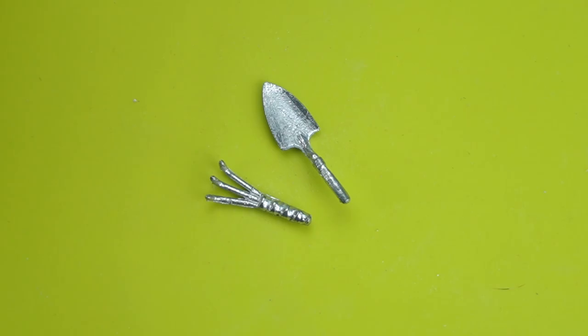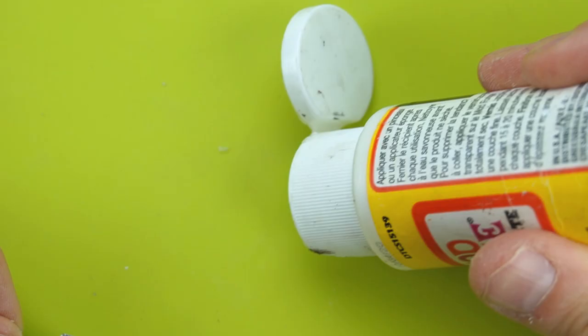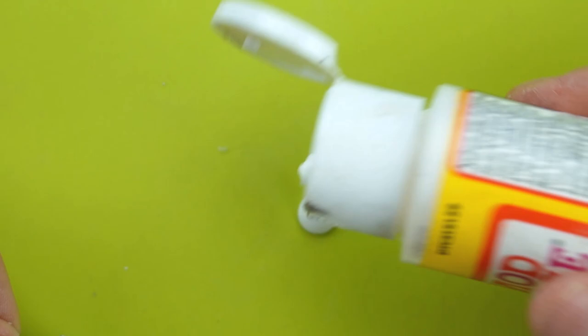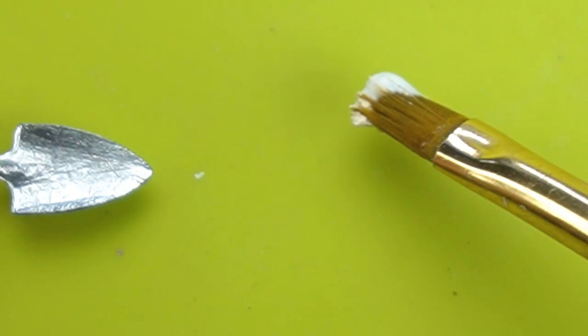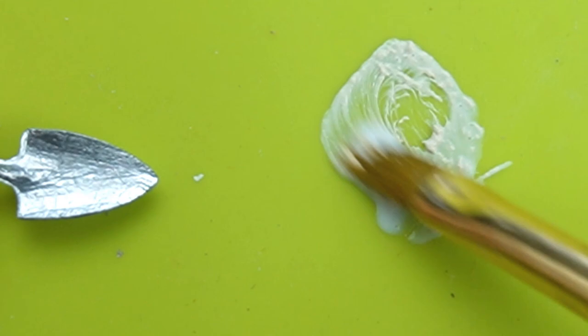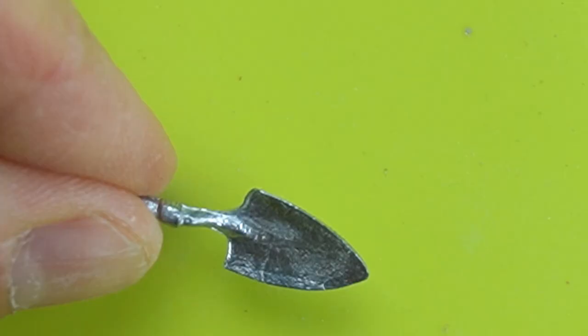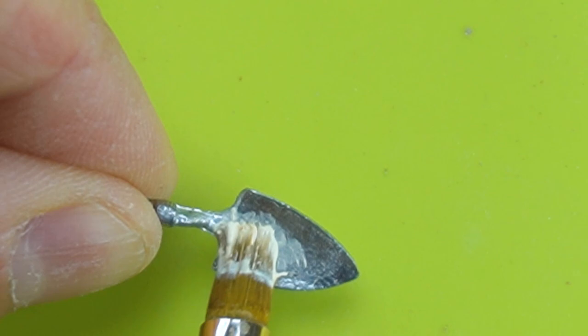The kit comes with two metal gardening tools. I'll start by transforming the hand trowel. Whenever I'm painting metal I like to mix my paint with a little bit of matte mod podge. I added a little ivory paint to the mod podge and started painting on the shovel to dull the shine. The mod podge helps my cheap acrylic paint stick to the smooth surface.